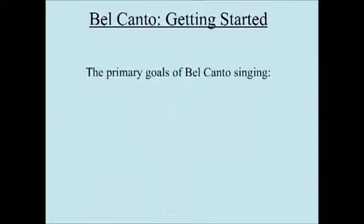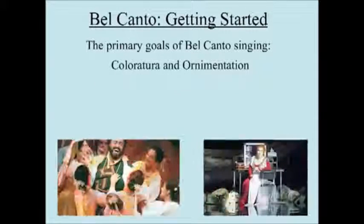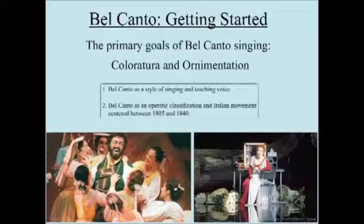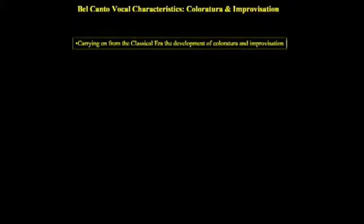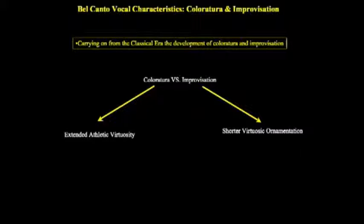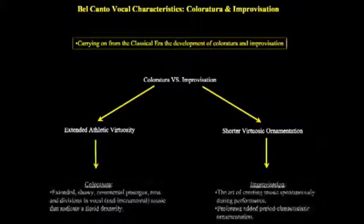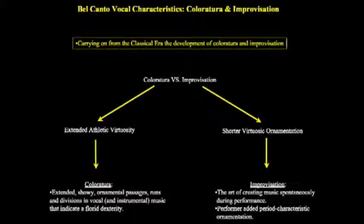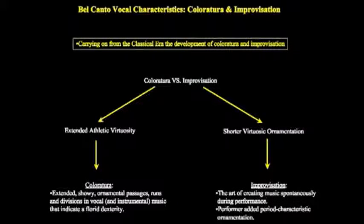Bel canto opera involves a lot of coloratura and ornamentation. Let's try and decipher the differences between the two. Ornamentation and coloratura are carry-ons from the classical era and Baroque periods in music history. Coloratura is an extended athletic virtuosity — it's showy, it's ornamental. There are runs and divisions in vocal and instrumental music that indicate a florid dexterity. What's important to remember is that coloratura is something the composer writes out and notates.